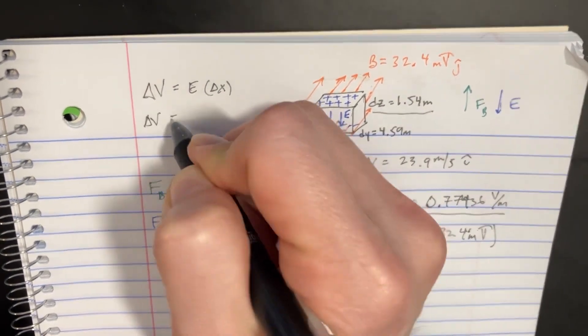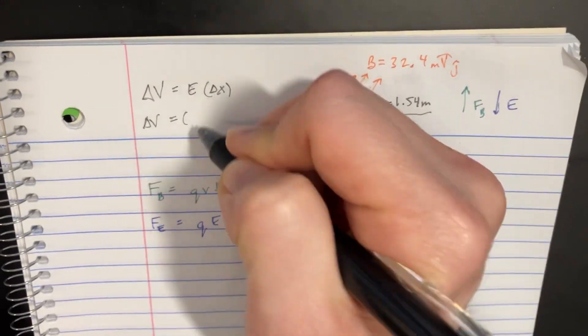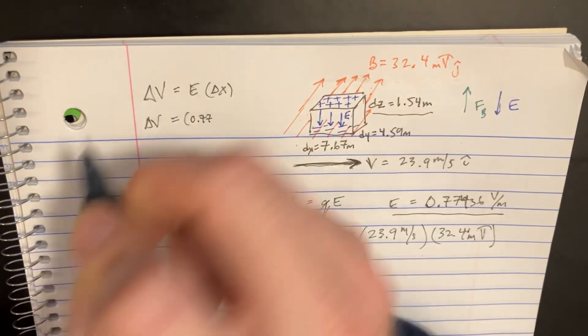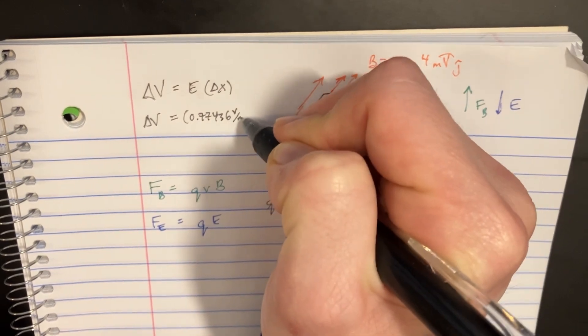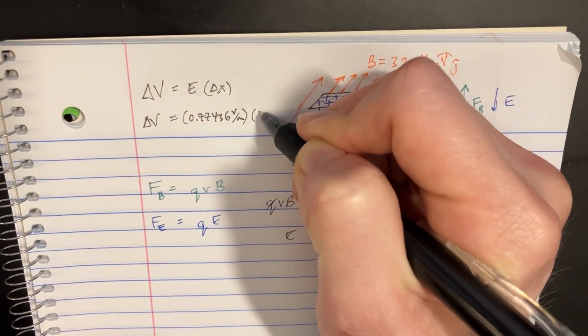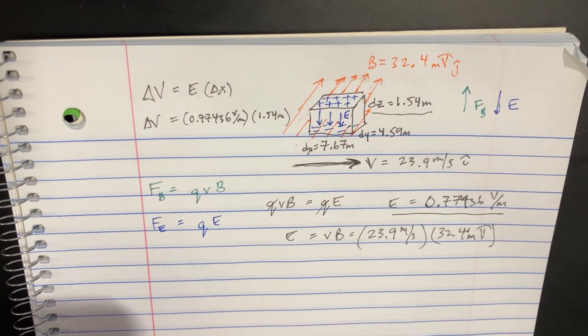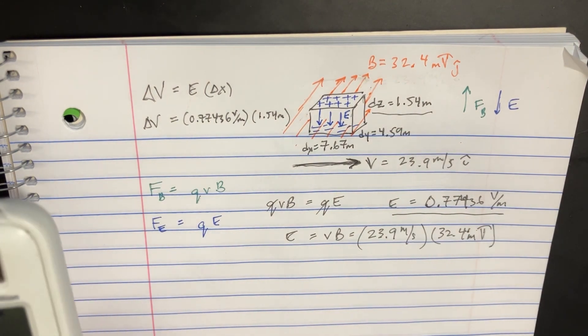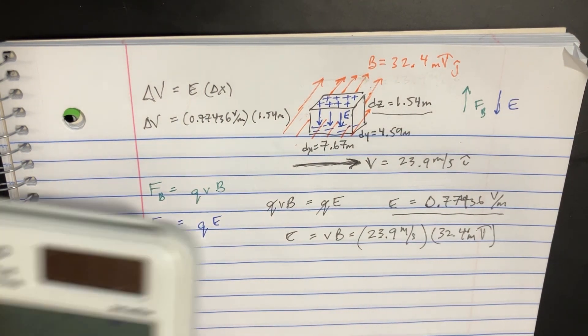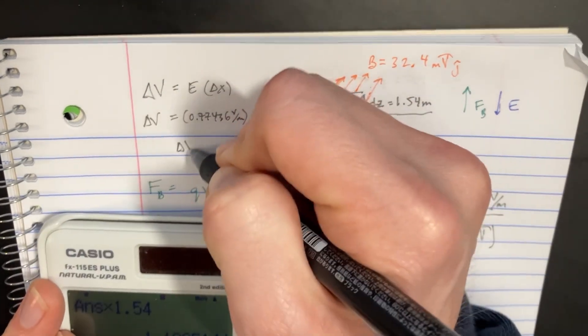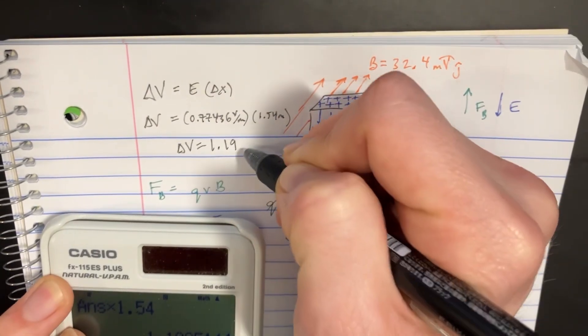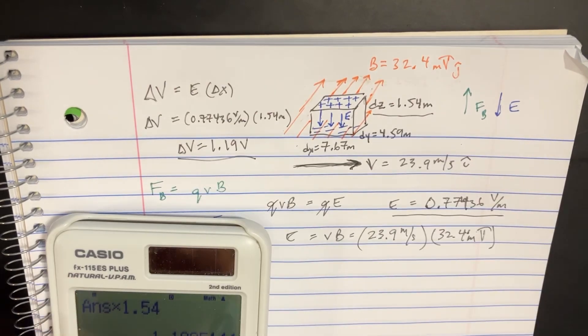So we're going to say that delta V is supposed to be equal to the E, which is that 0.77436 times 1.54 meters. 1.54 should get like the delta V is about 1.19 volts. All right, not too bad.